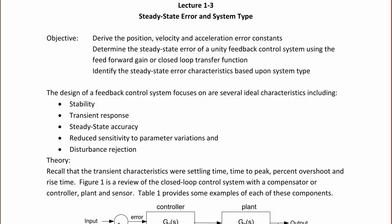The objectives for today's lecture are to derive the position, velocity, and acceleration error constants, to determine the steady-state error of a unity feedback control system using the feedforward gain or closed-loop transfer function, and to identify the steady-state error characteristics based upon system type.